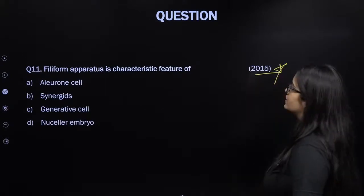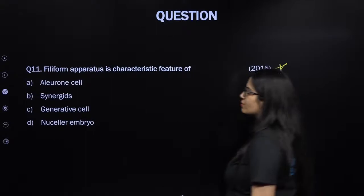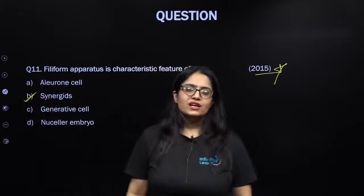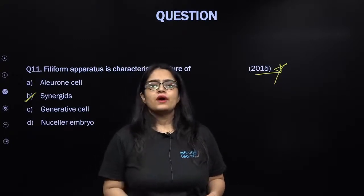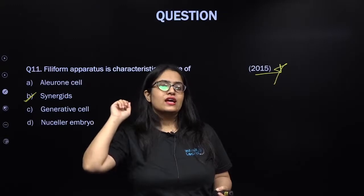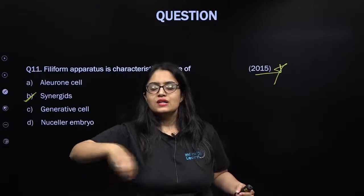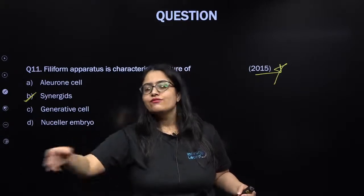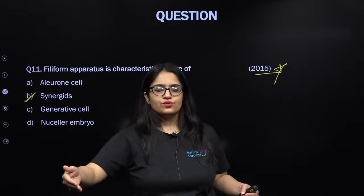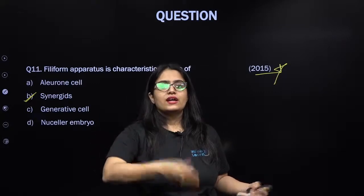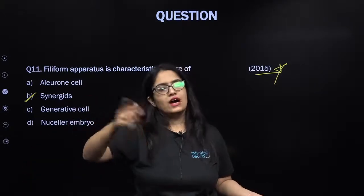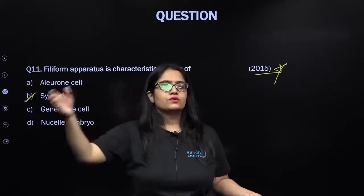From NEET 2015: filiform apparatus is a characteristic of synergids. Synergids are part of the female gametophyte (embryo sac). In synergids, finger-like projections known as filiform apparatus guide the pollen tube, so the pollen tube enters through the micropyle and into one of the synergids. As a result, one synergid degenerates and the two male gametes enter the embryo sac. One fuses with the egg cell to form a zygote; the other fuses with the two polar nuclei, forming the primary endosperm nucleus.